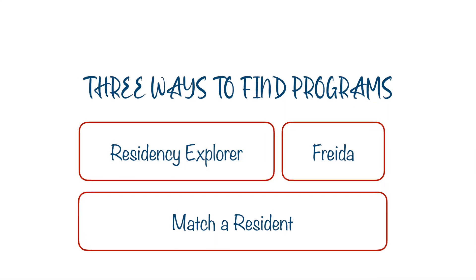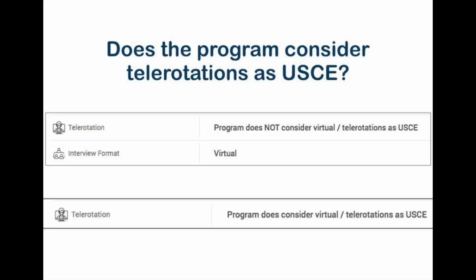The third resource I used was Match Resident. Match Resident was really helpful because it provided extra features not available in Residency Explorer or Freida. Since tele-rotations were my only USCE, and some programs were still not considering virtual rotations as USCE, Match Resident's database helped me avoid applying to programs that accepted only in-person rotations as USCE.